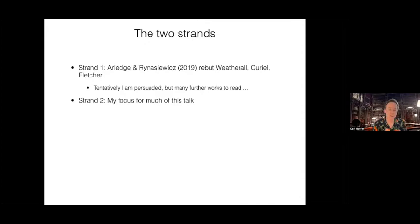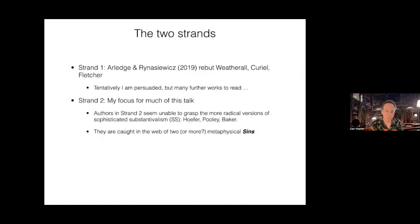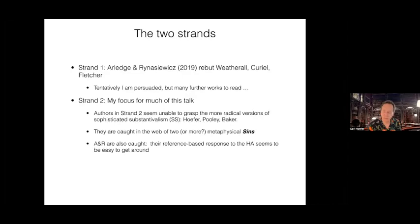Strand two is really where I'll focus much of my attention. The authors in strand two seem unable to grasp the more radical versions of sophisticated substantivalism offered by myself, Oliver Pooley, and Dave Baker. From my perspective, these authors are caught in the web of two philosophical sins. And it's not just the metaphysical philosophers committing these sins — people like Weatherall, Curiel, and also Arledge and Rzaniewicz are still committing them to some extent.